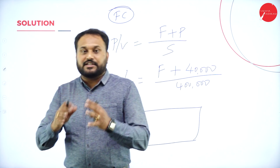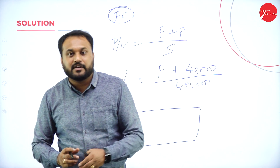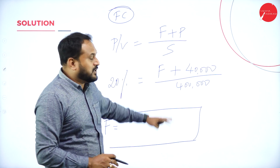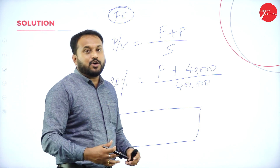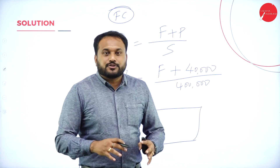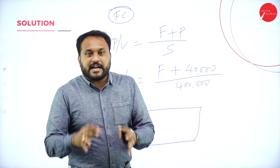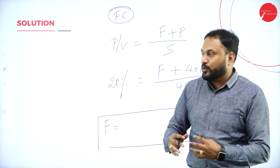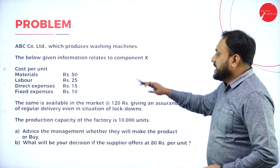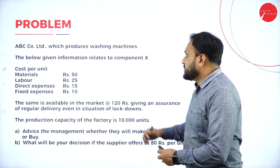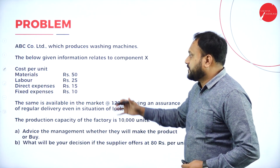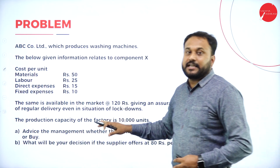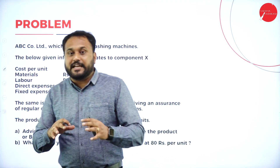Please watch all the sessions on marginal costing and you will get all the formulas and solutions. For any doubt regarding this session, please do call us. The next question is ABC Company Limited, which produces a washing machine. This type of question can come for 10 marks, so please be ready.